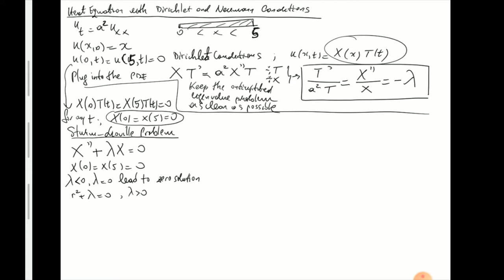We're looking just at λ > 0. You can denote λ positive as something squared, but you can't use 'a' now because we have it already in the problem. You don't have to do that — you can work with √λ, just be aware you are in the complex root case. If λ > 0, when you solve for r, that's ±√(−λ) = ±i√λ. So your solution at this point is C₁ cos(√λ · x) + C₂ sin(√λ · x).